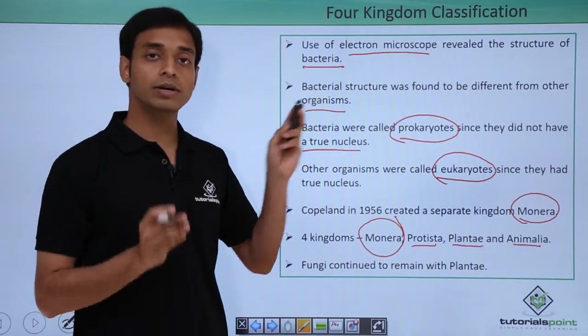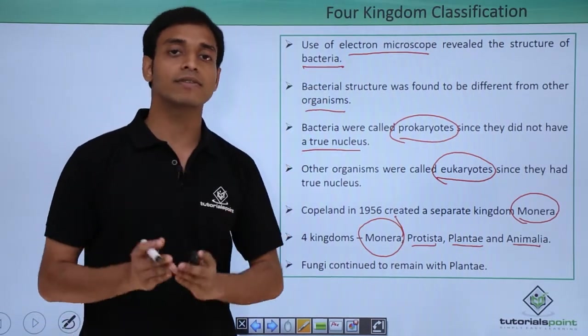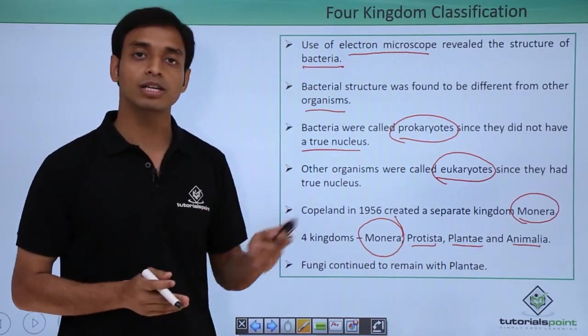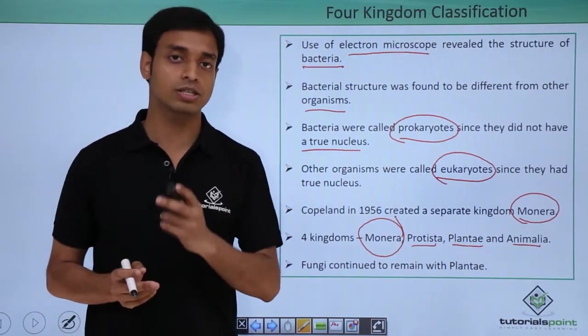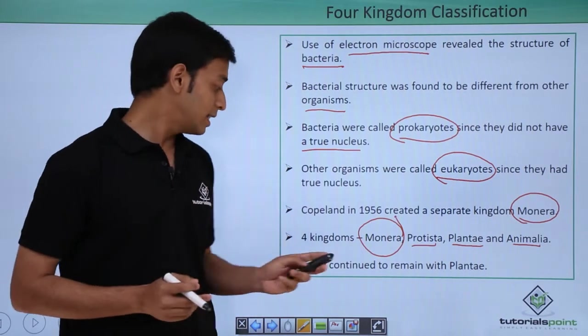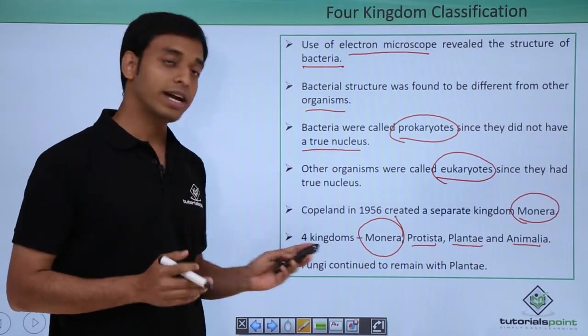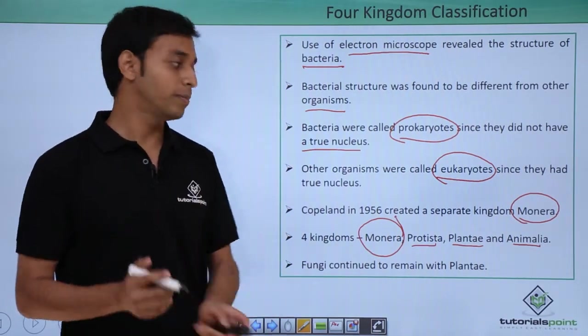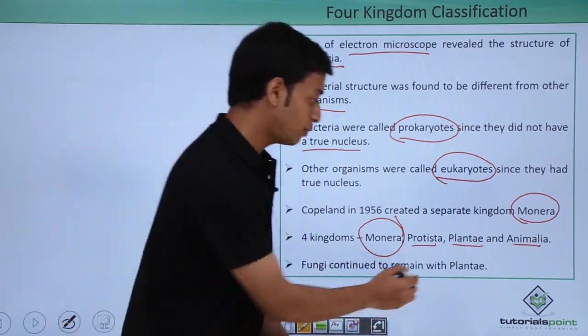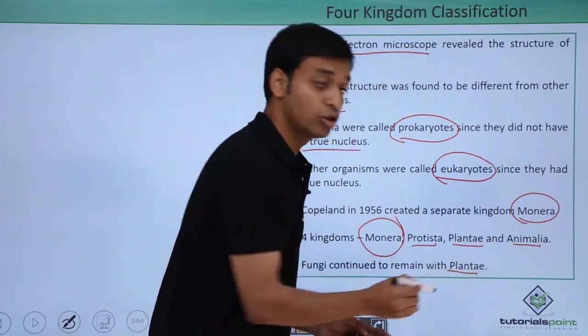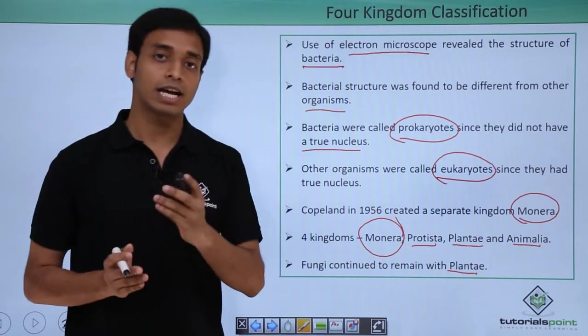The most important disadvantage of the four kingdom classification system is that fungi continued to remain classified under plants, which is not correct.